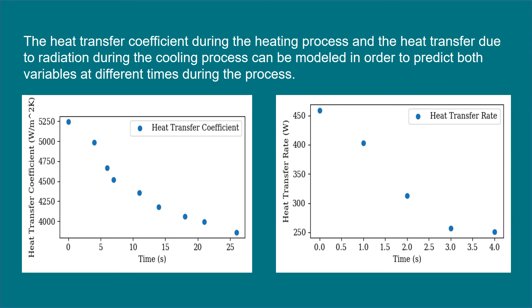From that, the heat transfer coefficient during the heating process and the heat transfer due to radiation during the cooling process can be modeled to predict both variables at different times. For the heating process, we experienced heat transfer due to convection. We took the heat flux of 5 million watts per meter squared, multiplied it by the surface area to get the overall heat transfer rate, then calculated the heat transfer coefficient by subtracting the surface temperature from the atmosphere temperature. The model on the left shows the heat transfer coefficient decreasing as time goes on.